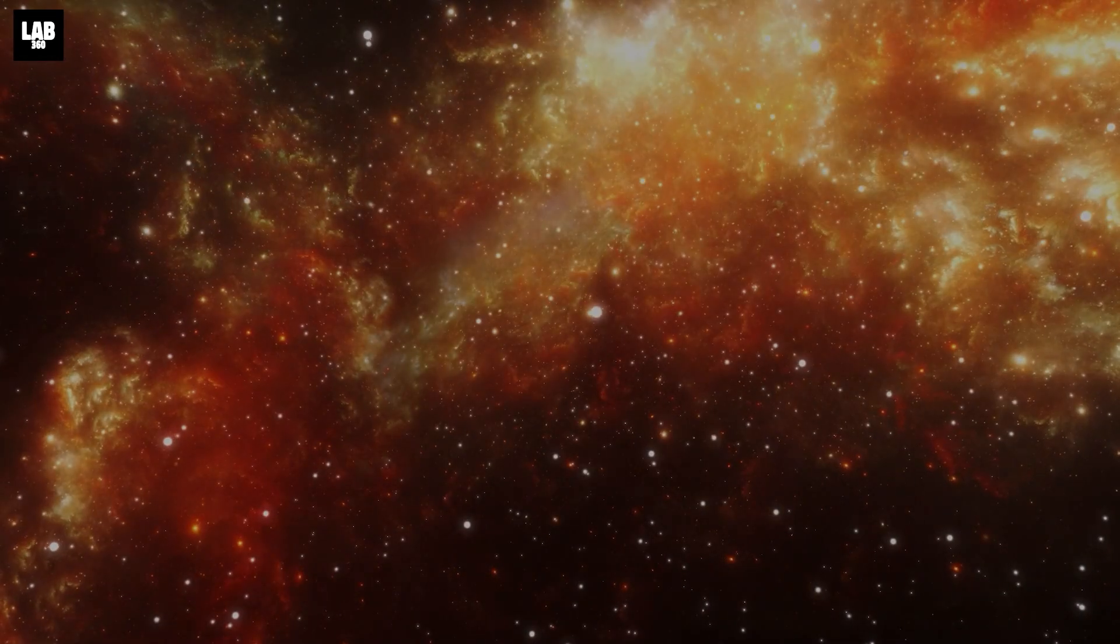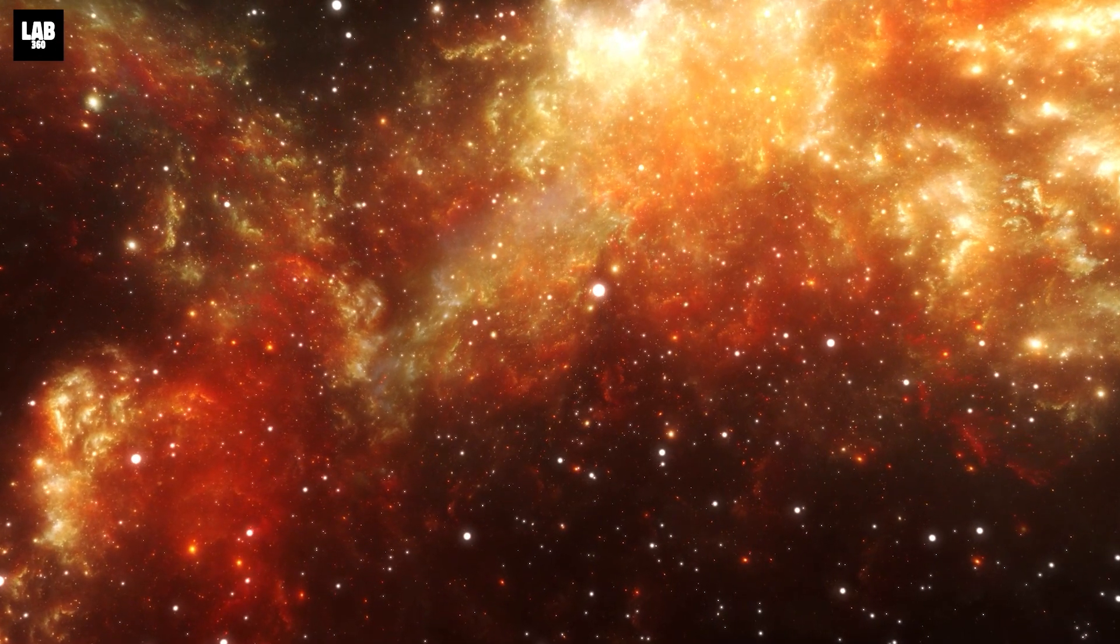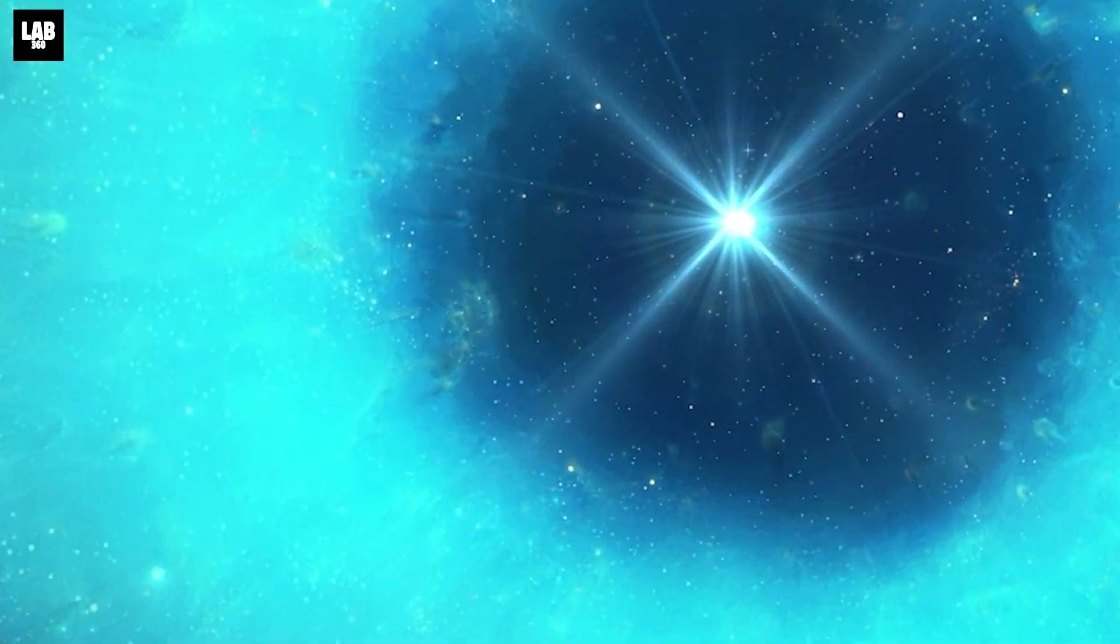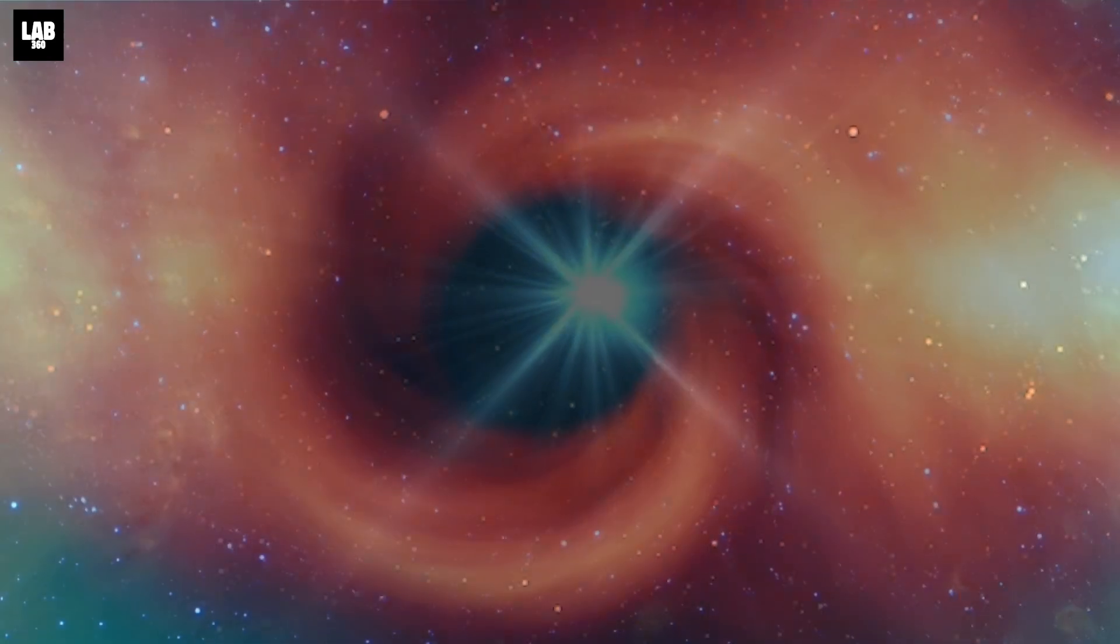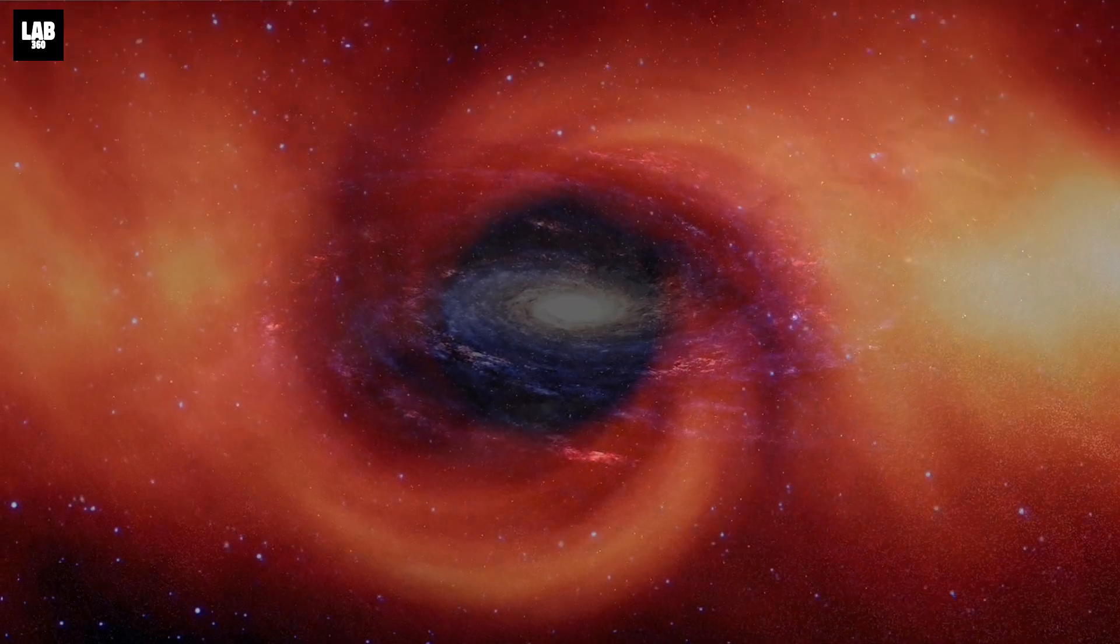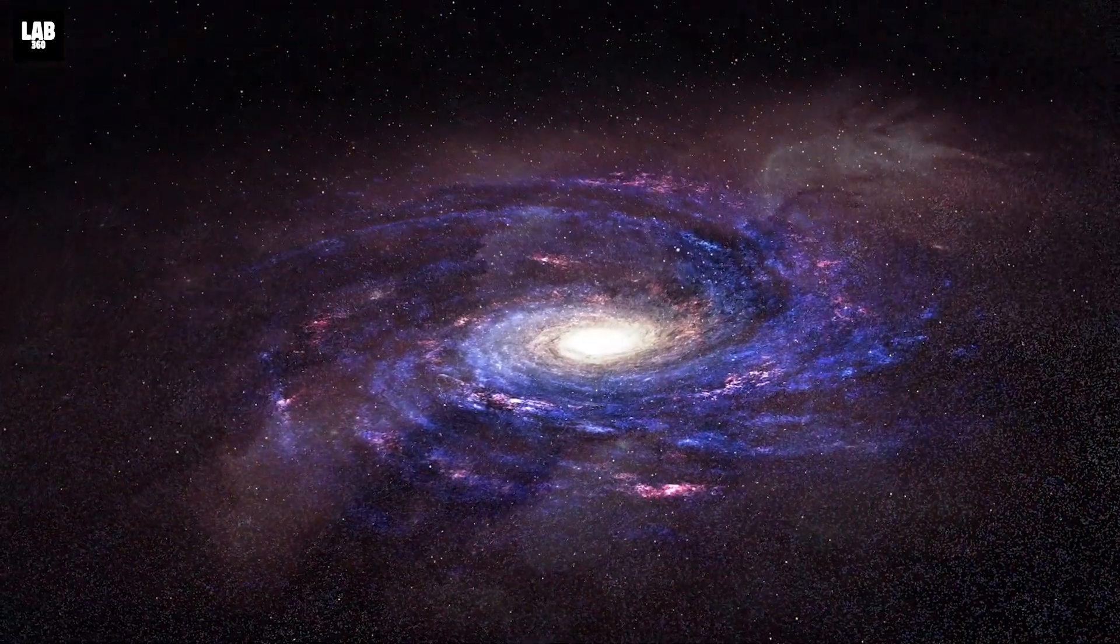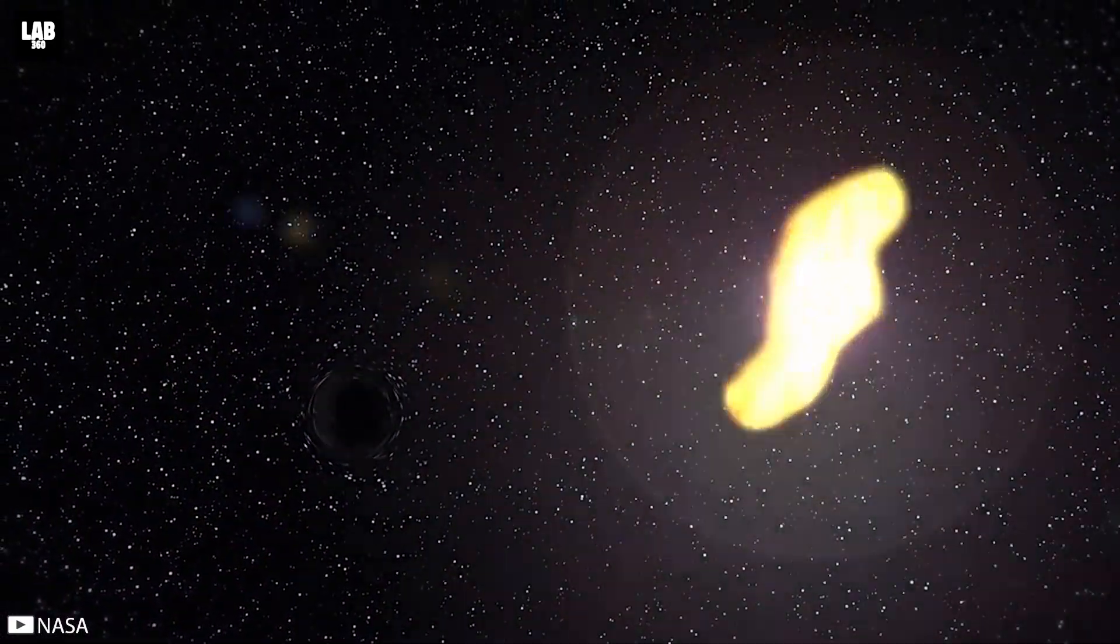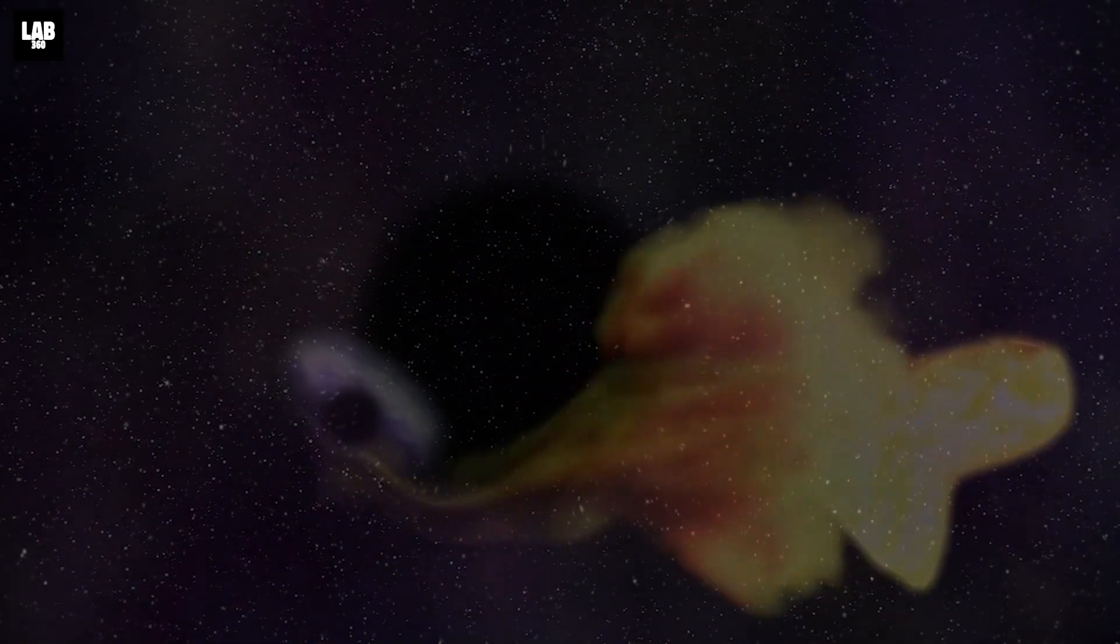Our galaxy contains roughly 100 to 400 billion stars. These include stars at various stages of evolution. Although black holes with masses comparable to stars have previously been discovered in our galaxy, their presence has always been inferred from their interactions with the companion star. This is the first time however, that one has been clearly identified in isolation.